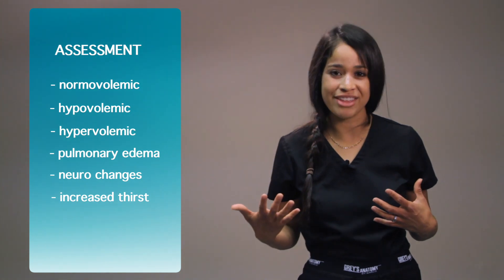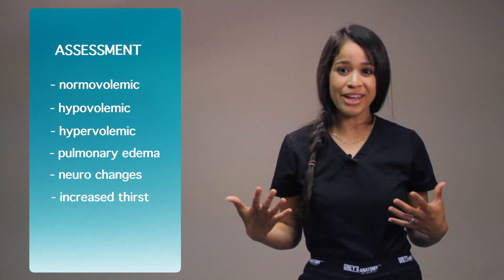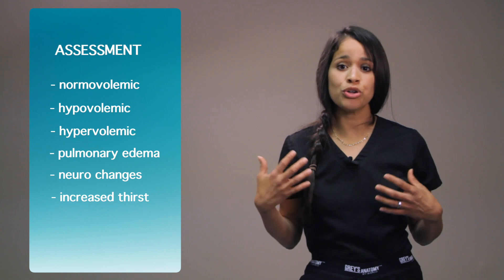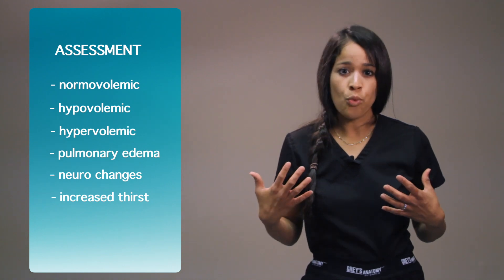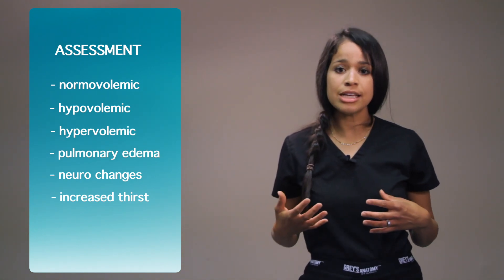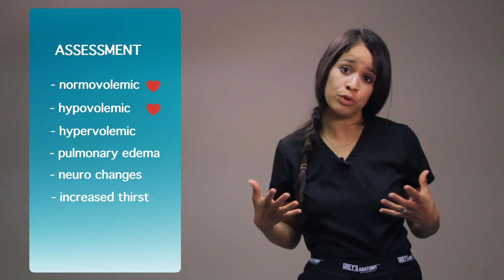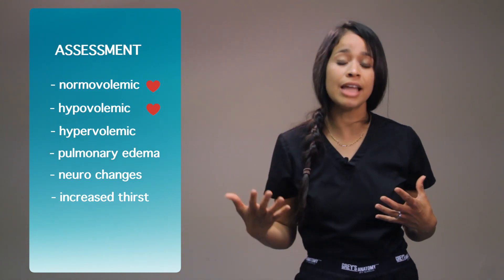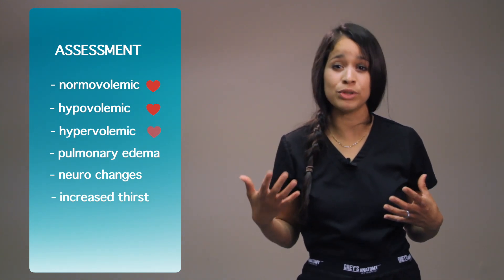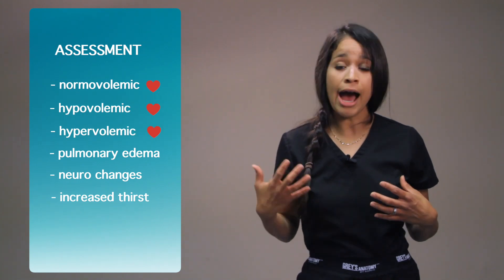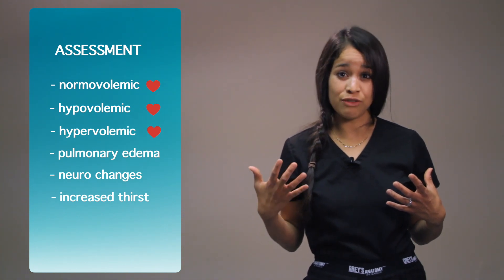What are the assessment findings with your patient that has elevated sodium levels, beginning with the cardiovascular system? Your heart rate and blood pressure will correlate with your vascular status. If your patient is normovolemic, he or she may just have a fast heart rate. A patient with hypovolemia will have a fast heart rate plus hypotension. A hypervolemic patient will have a rapid heart rate, hypertension, and/or elevated CVP — central venous pressure — which monitors volume status.